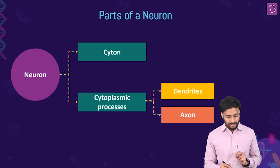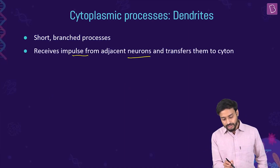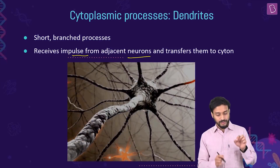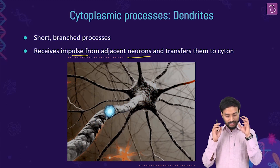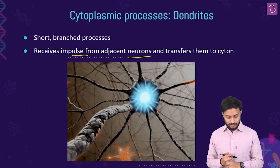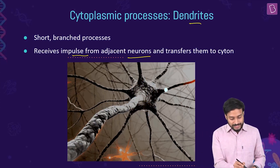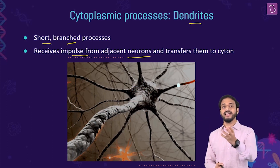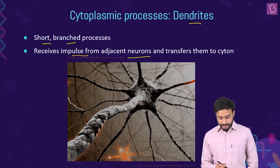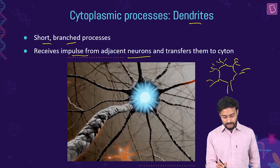The cytoplasmic processes include dendrites and the axon. Dendrites are short, branched processes that receive impulses from adjacent neurons and transfer them to the cytone. They receive the neural signals and pass them along toward the cell body.